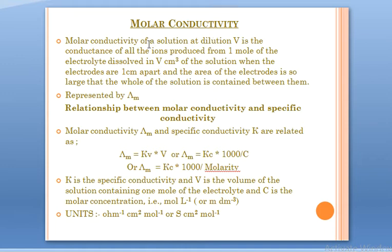Molar conductivity of a solution at dilution V is the conductance of all the ions produced from one mole of the electrolyte dissolved in V cubic centimeters of the solution, when the electrodes are one centimeter apart and the area of the electrodes is so large that the whole of the solution is contained between them.